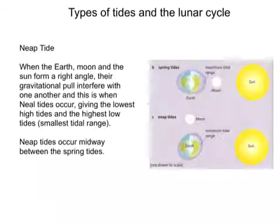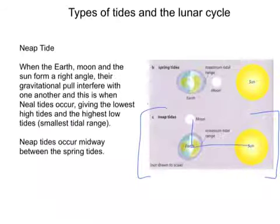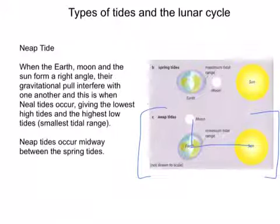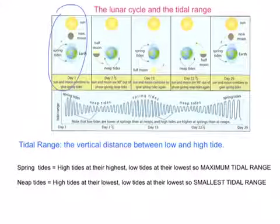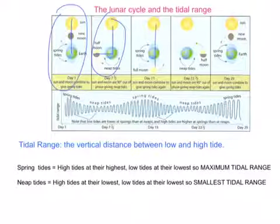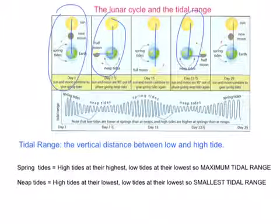The next type of tide is the neap tide, shown in diagram C. The moon and the sun are at right angles to each other, so their gravitational pulls interfere with each other. This gives the lowest high tides and the highest low tides, so you get the smallest tidal range. Neap tides occur midway between the spring tides. In the cycle you have: spring tide, neap tide, spring tide, neap tide — you can see on the diagram the moon and sun in alignment for spring tides, then at right angles for neap tides, repeating throughout the lunar month.